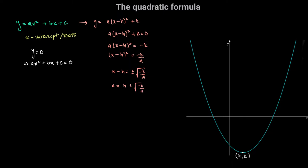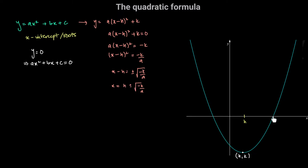Now how do we interpret this result? First, h is simply the x-coordinate of the vertex of this parabola. This parabola intersects the x-axis at two different points, and those two points are equidistant from the vertex because the parabola is symmetric. So my two x-intercepts are h plus the square root of negative k over a, and h minus the square root of negative k over a.